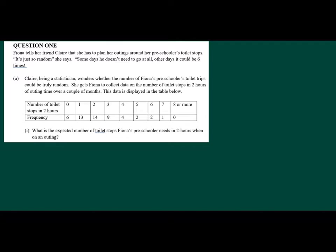So she gets her to collect data on the number of poos that a certain preschooler does, and here's our data here. We've got the number of toilet stops in two hours. That's quite a lot, especially in two hours, and then we've got the frequency, the number of times that occurs. If we go on to the first question here, what is the expected number of toilet stops Fiona's preschooler needs in two hours when on an outing?